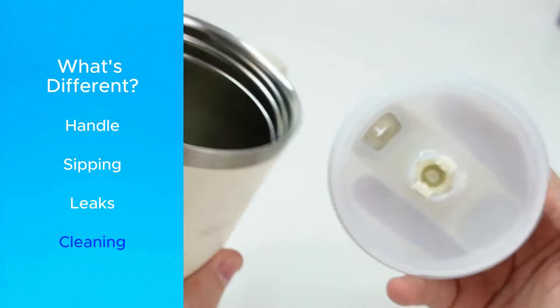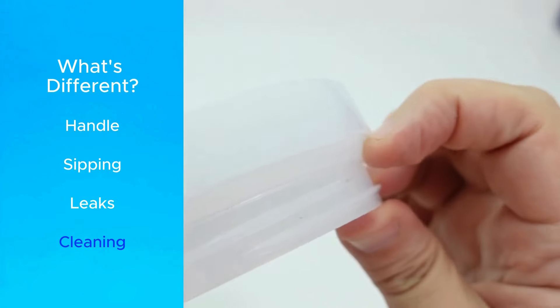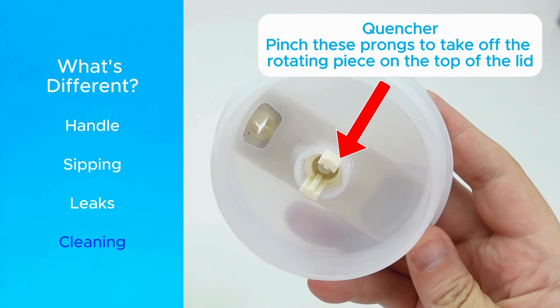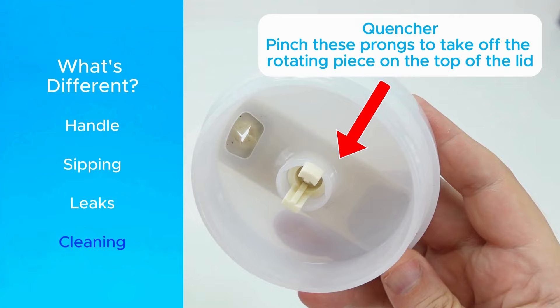But if you're a clean freak, the Quencher has a big advantage because of how you disassemble the lid. It's really easy, including being able to pop off the rotating piece by pinching the prongs on the bottom.